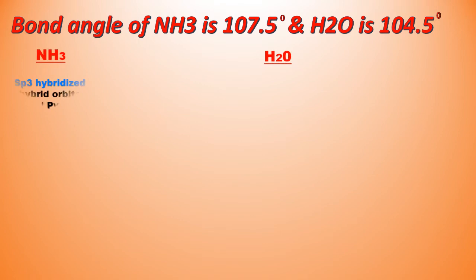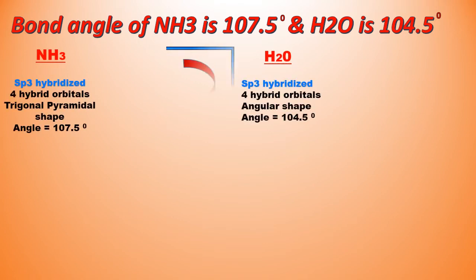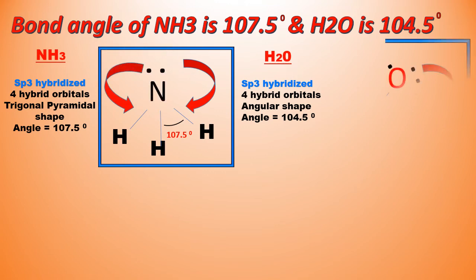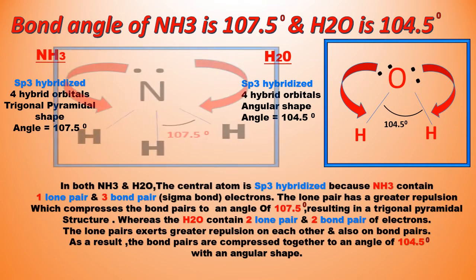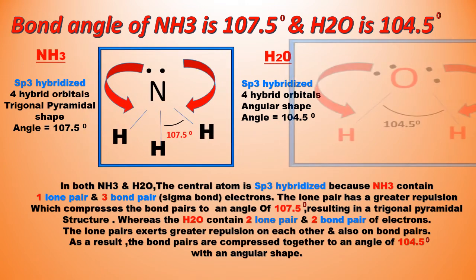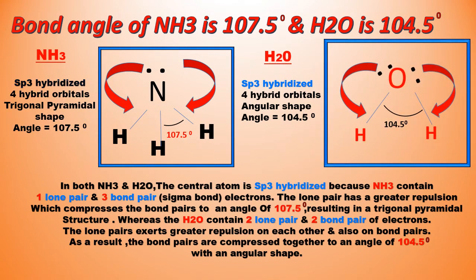Due to lone pair repulsion, the bond pairs compress and disrupt the ideal tetrahedral shape. The ideal shape in case of sp3 hybridization is tetrahedral, but due to the presence of one lone pair of electrons in ammonia, the lone pair compresses the bond pairs to an angle of 107.5 degrees, resulting in a trigonal pyramidal shape.